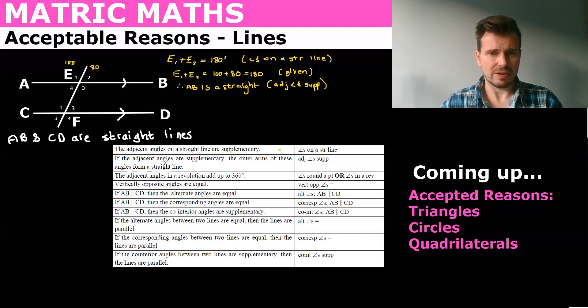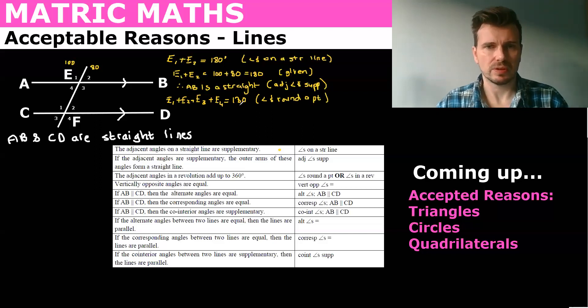Now let's look at angles around a point. Okay so you would say E1 plus E2 plus E3 plus E4 equals 360 degrees. And just learn one. So I would say just angles around a point. Angles around a point. Very short. Not 180, 360.